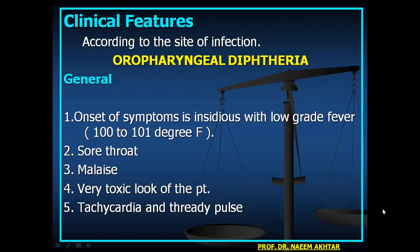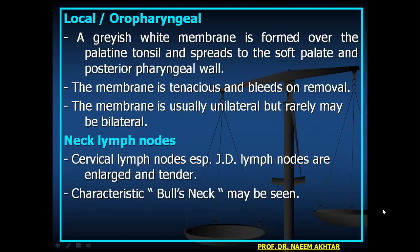There is sore throat, malaise, a very toxic appearance, tachycardia, and thready pulse. A grayish-white membrane forms over the palate and tonsils and spreads to the soft palate and posterior pharyngeal wall. The membrane is tenacious and bleeds when removed. It is usually unilateral but rarely bilateral. Cervical lymph nodes, especially jugulo-digastric nodes, are enlarged and tender. A characteristic bull's neck may be seen.